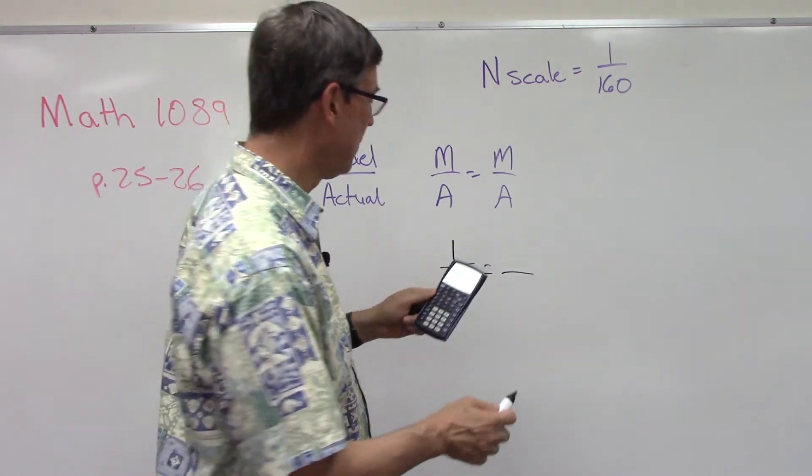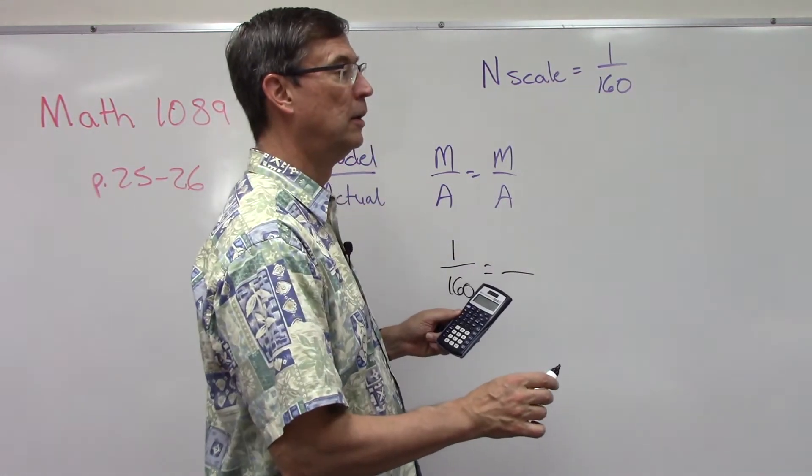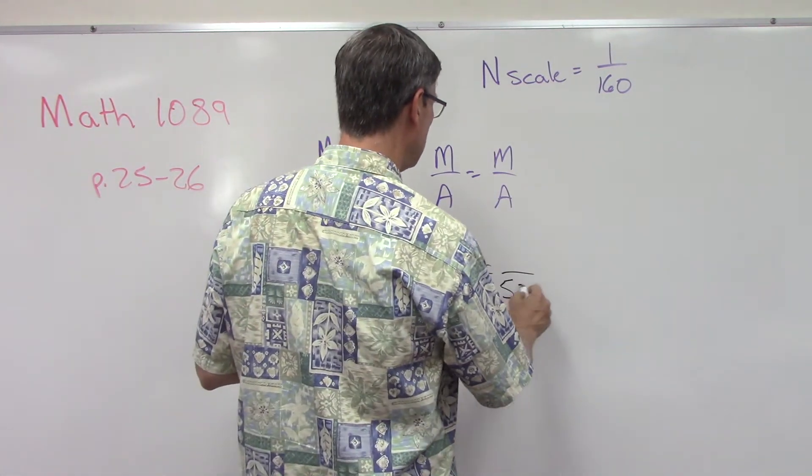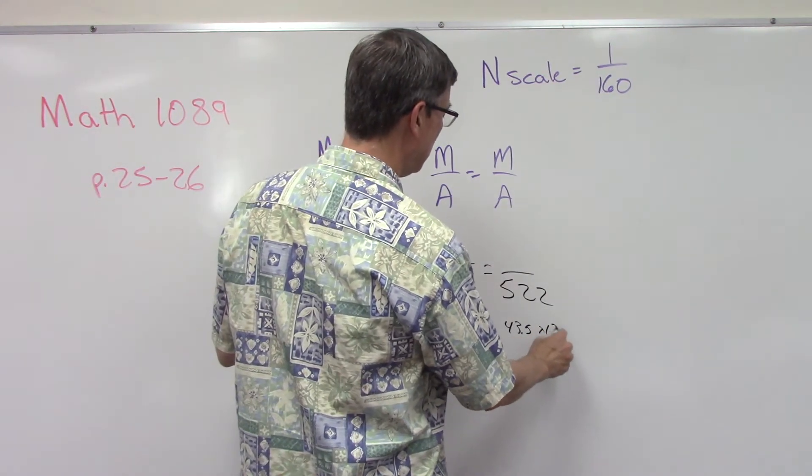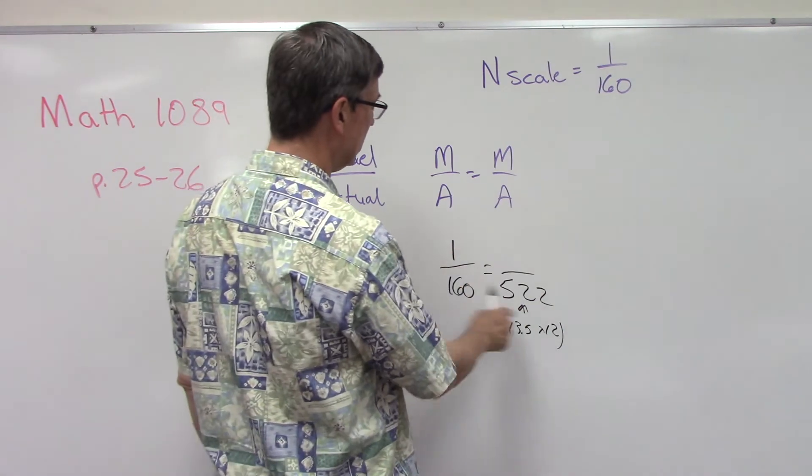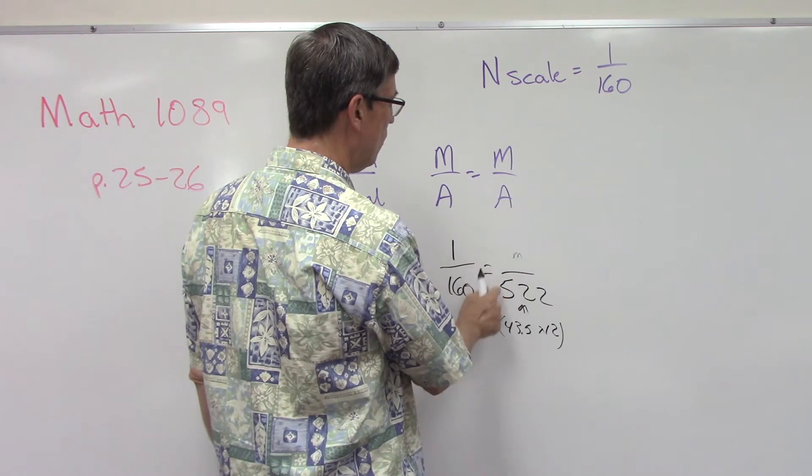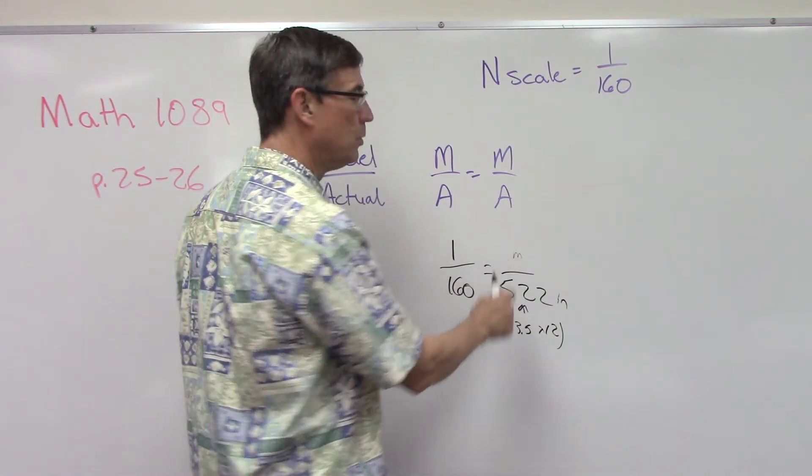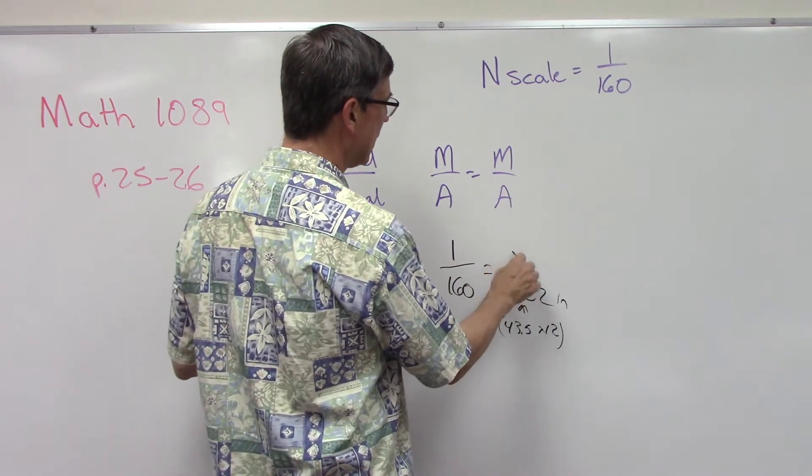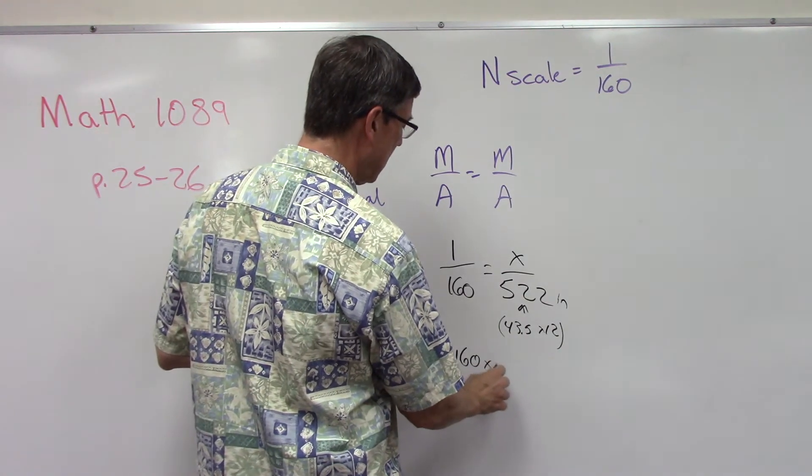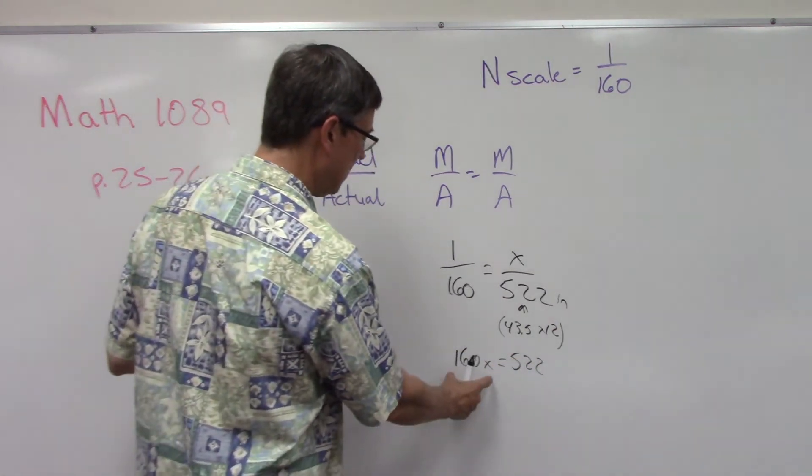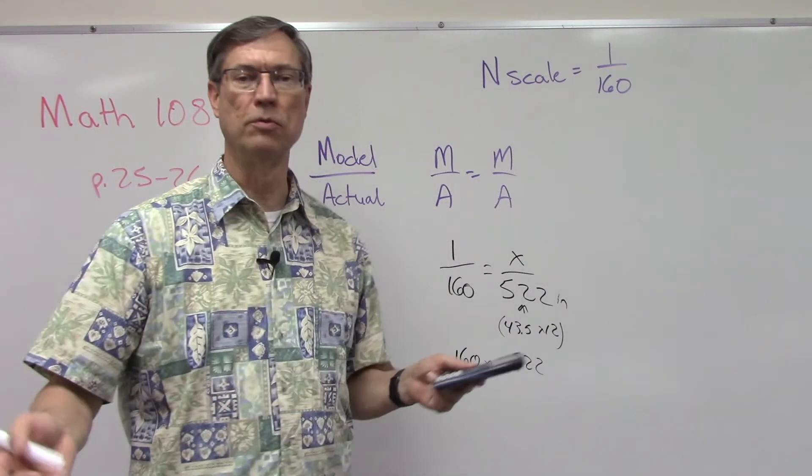So that means I'm going to have 522. All right, so we're going to put the 522 down here. This is 43.5 times the 12 inches gives me the 522 inches. So here's the scale: 1 over 160, this is the model over the actual, 522 inches. The question is how long will that model be? Now that we have it set up we can call this X. So we could cross multiply and say 160X equals 1 times 522, and then you can multiply by 1 over 160 or divide by 160 on both sides. You can finish that and get the answer.